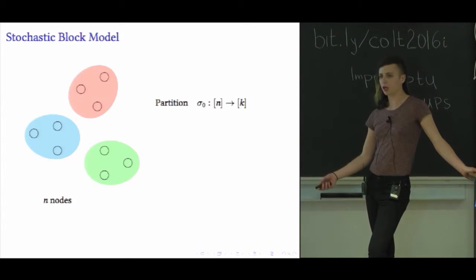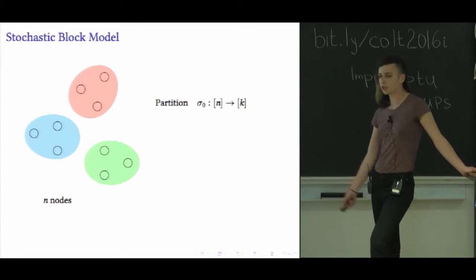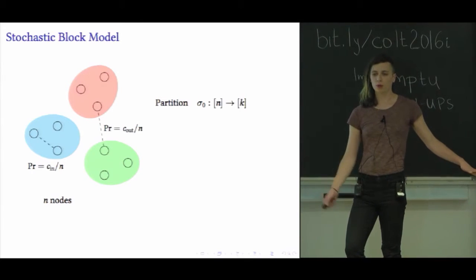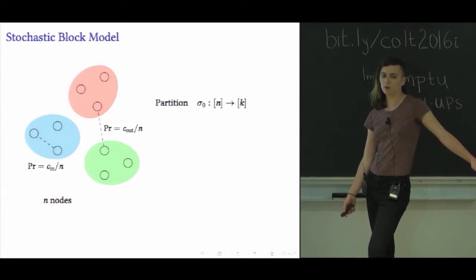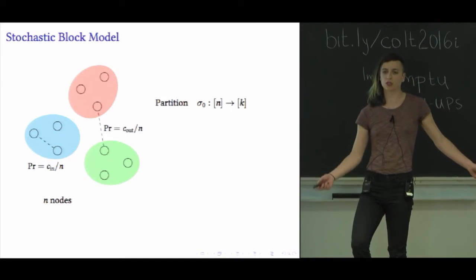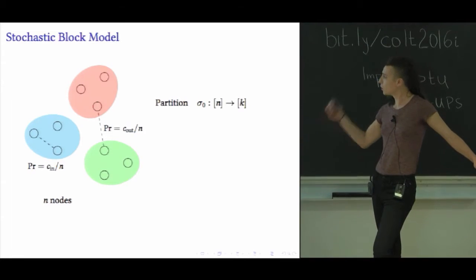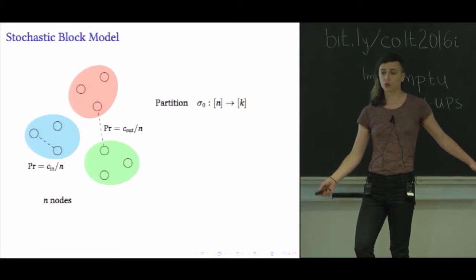The results in the paper are more general, but for this talk, let's focus on a simple symmetric case where there are only two types of edge probabilities. With probability C_in/n, vertices of the same type connect. With probability C_out/n, vertices of different types connect. This 1/n scaling puts us in an interesting sparse regime where the number of edges is only linear in the number of nodes. Assume the partition divides vertices into k equal-sized groups with uniform prior.